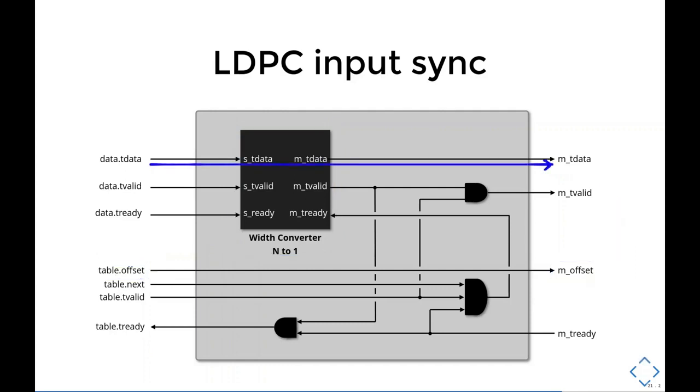The LDPC input sync is used to synchronize table offsets to data bits. Because parity bit offsets are given one per cycle, we need to convert the input data stream to one bit as well. This ensures that output data and output offsets are synchronized. Data passes through the width converter directly. Offsets pass through literally directly. Output will be valid when both width converter and table have data. We can consume an offset from the LDPC table whenever there's a valid data bit and the reader is ready to consume this data bit as well.